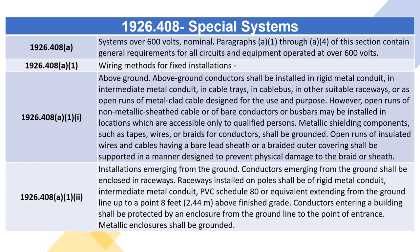1926.408(A)(1): Wiring Methods for Fixed Installations. 1926.408(A)(1)(i) — Above Ground. Above-ground conductors shall be installed in rigid metal conduit, in intermediate metal conduit, in cable trays, in cable bus, in other suitable raceways, or as open runs of metal-clad cable designed for the use and purpose. However, open runs of non-metallic sheathed cable or of bare conductors or busbars may be installed in locations which are accessible only to qualified persons.